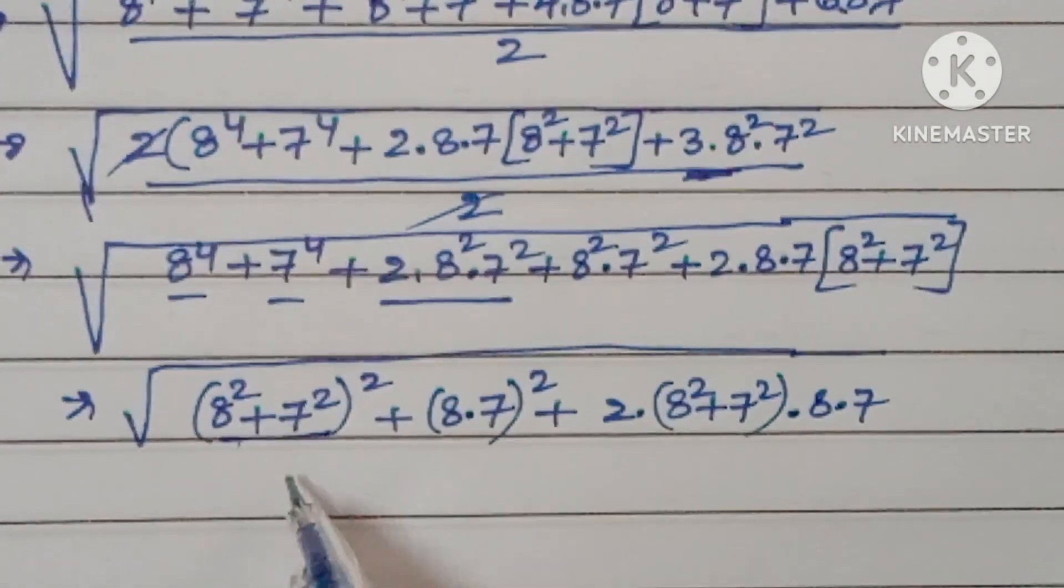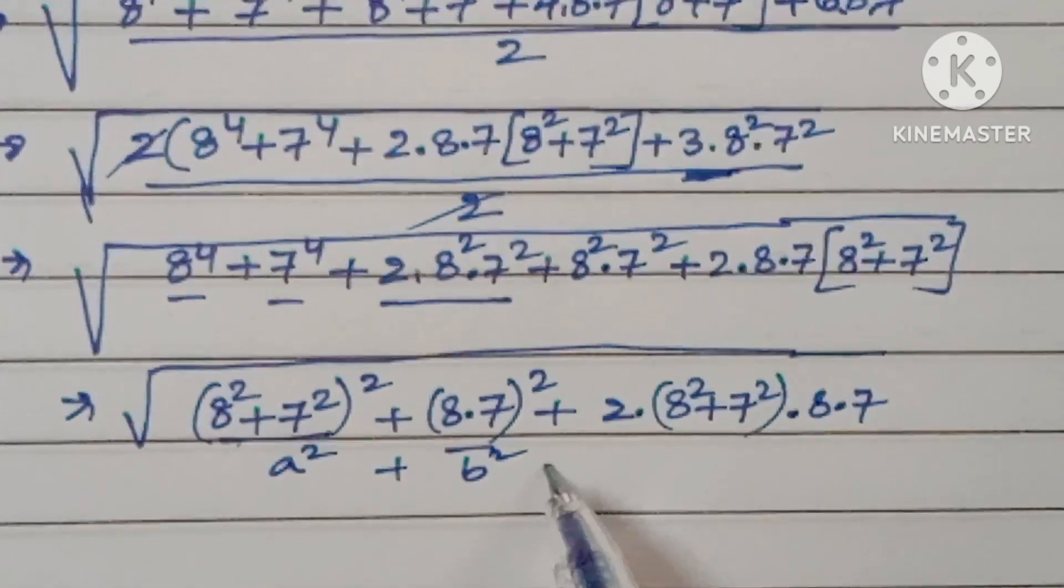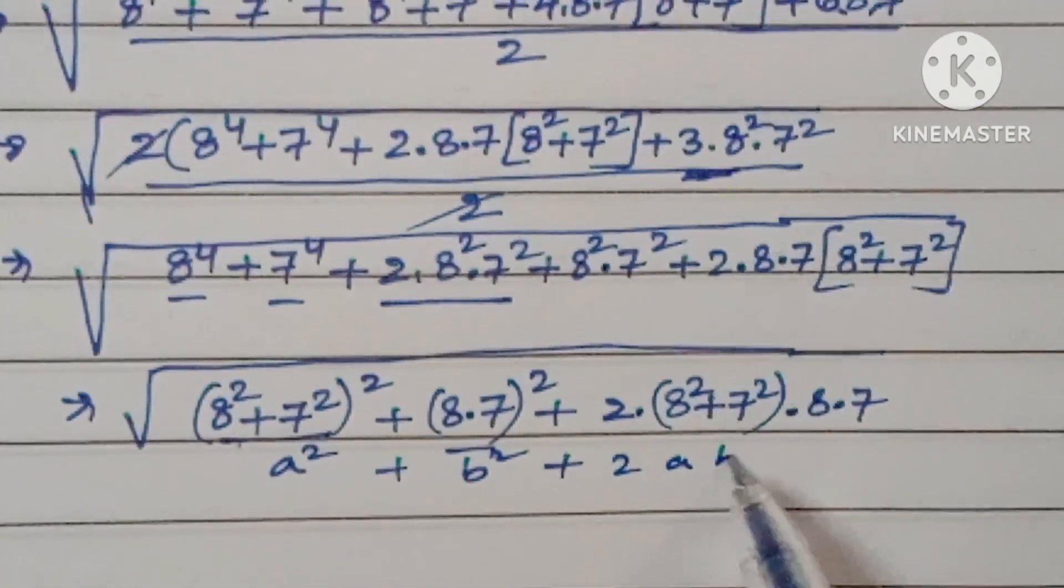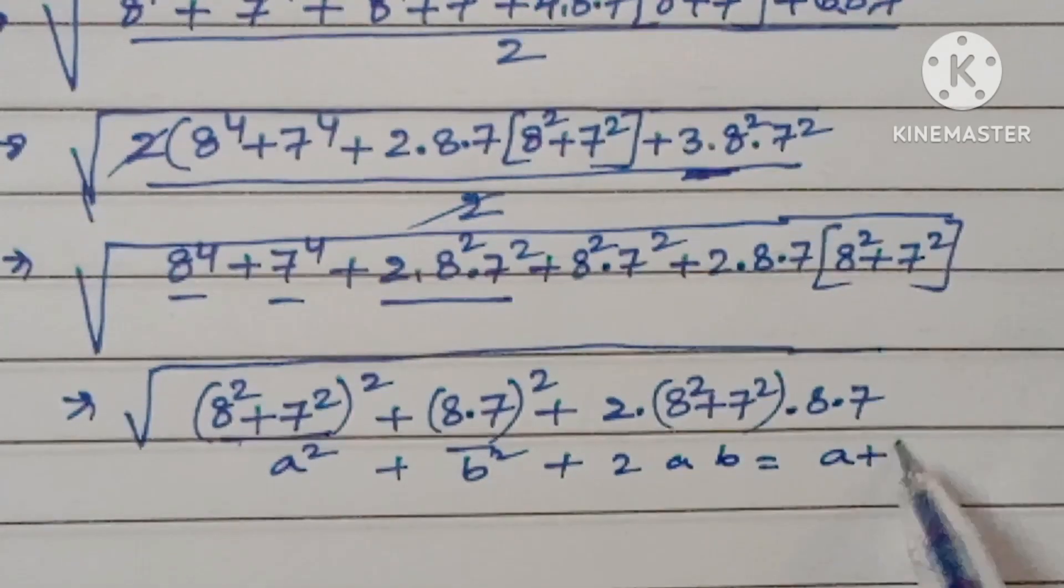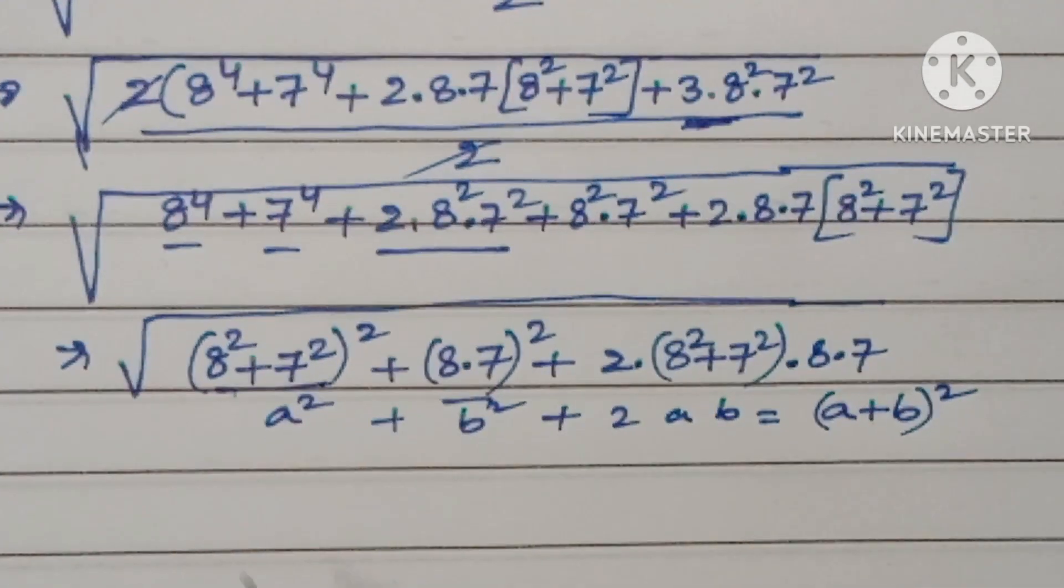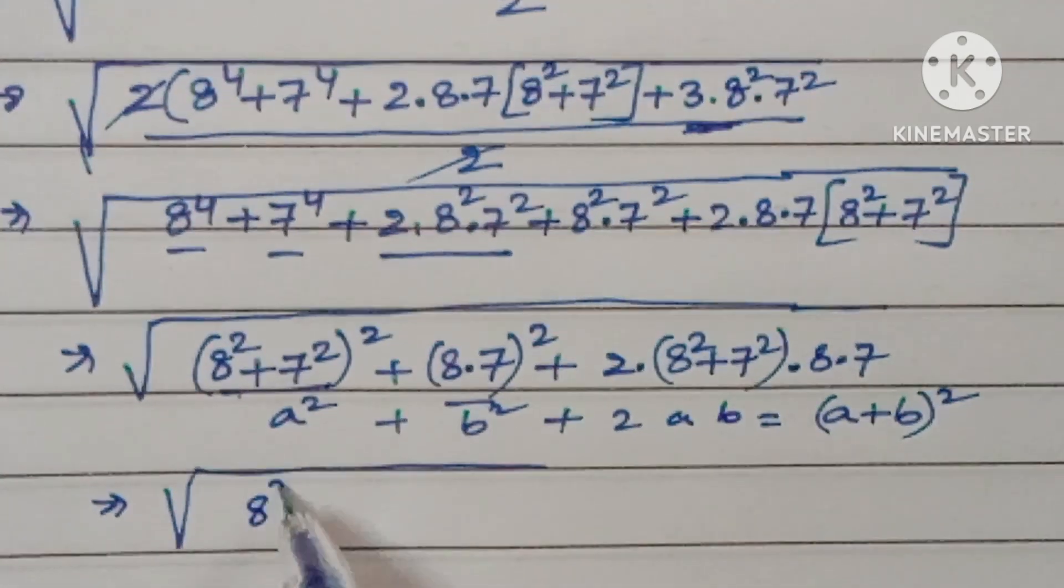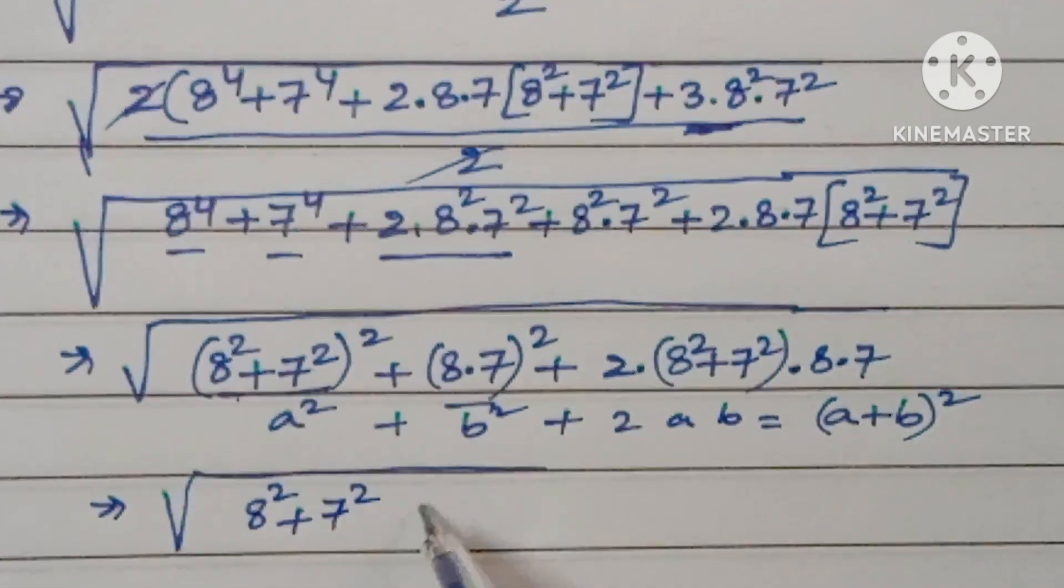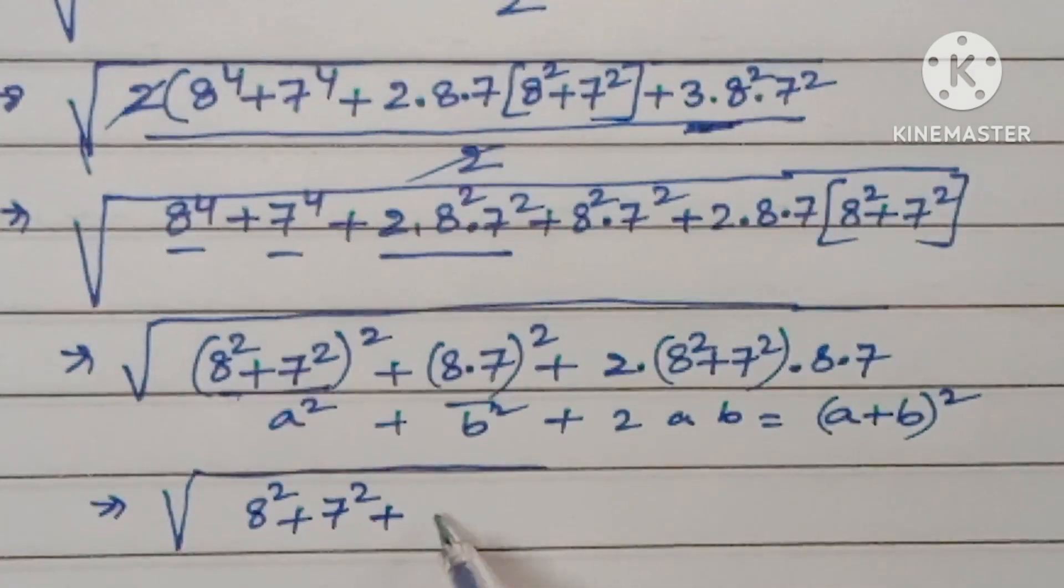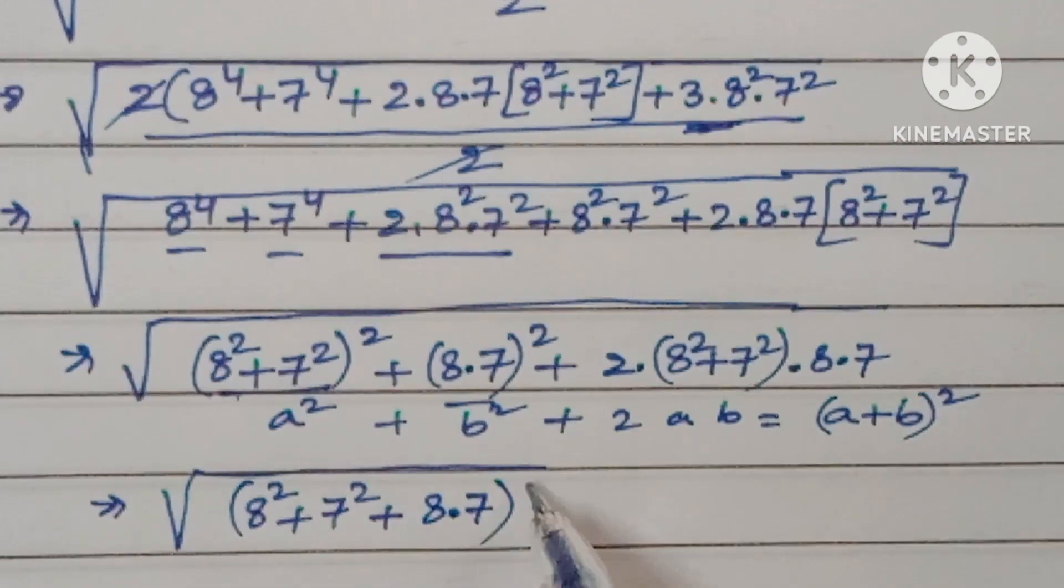This total is a², this is b² plus 2ab, which is (a+b)². So square root of (8² plus 7² plus 8 times 7)². The square and square root get cancelled.